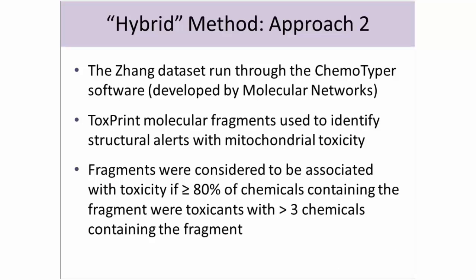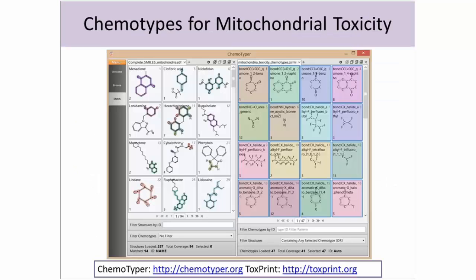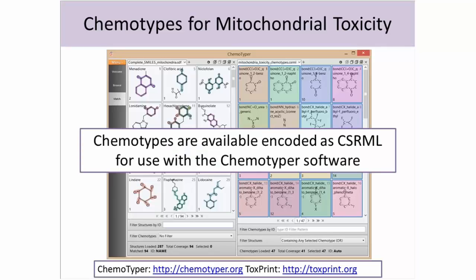This is a slightly different, more statistical approach. We can also use the Chemotyper software, which allows you to explore a dataset and do some of this analysis yourself by highlighting which molecular fragments are more likely to be in active versus inactive chemicals. We've used this tool to help derive alerts that have an underlying mechanism. The Chemotyper is free to download from Molecular Networks' website, and you can import the alerts encoded as chemotypes in CSRML format, then use them to group your own chemicals on your own computer.